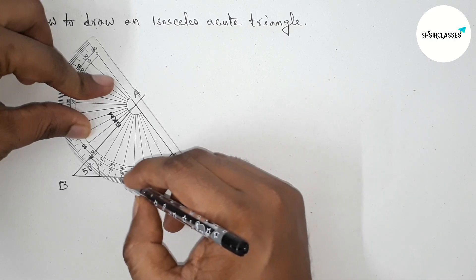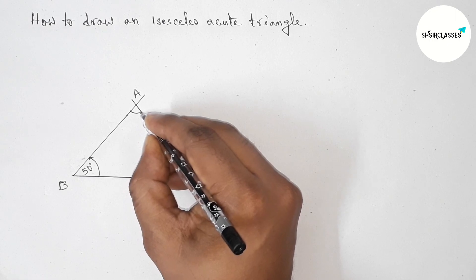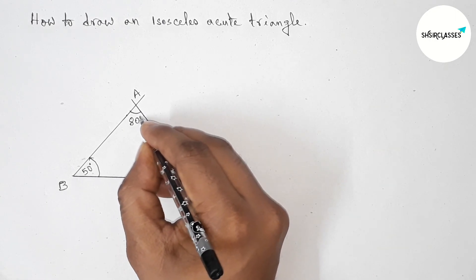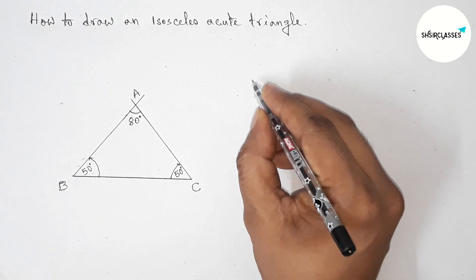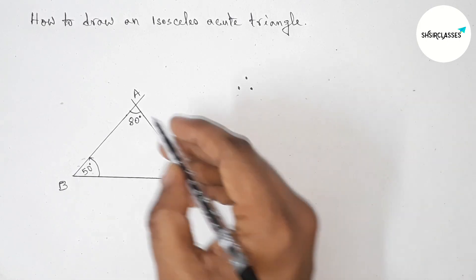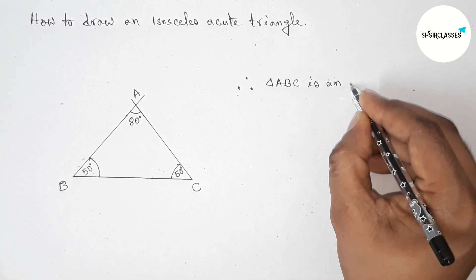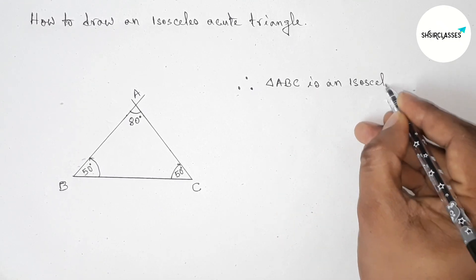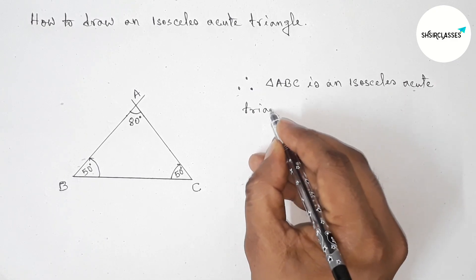So this is perfectly 80 degrees, and 80 degrees is also an acute angle. So here all the angles are acute angles. Therefore, triangle ABC is an isosceles acute angle triangle because